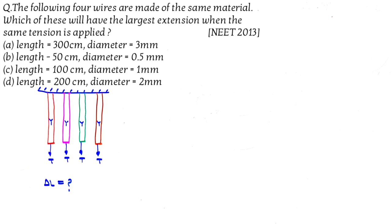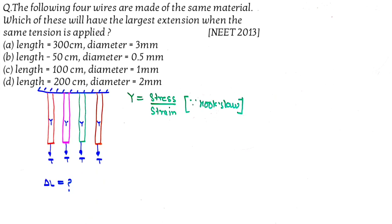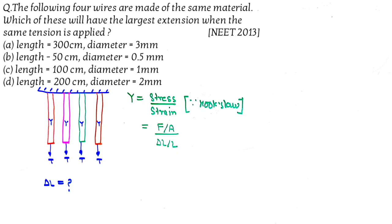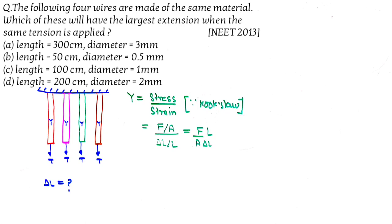You know the formula for Young's modulus: Y equals stress by strain by Hooke's law. Stress is force by unit area and strain is change in length by original length. Solving, you get delta l equals f l by A into Y.